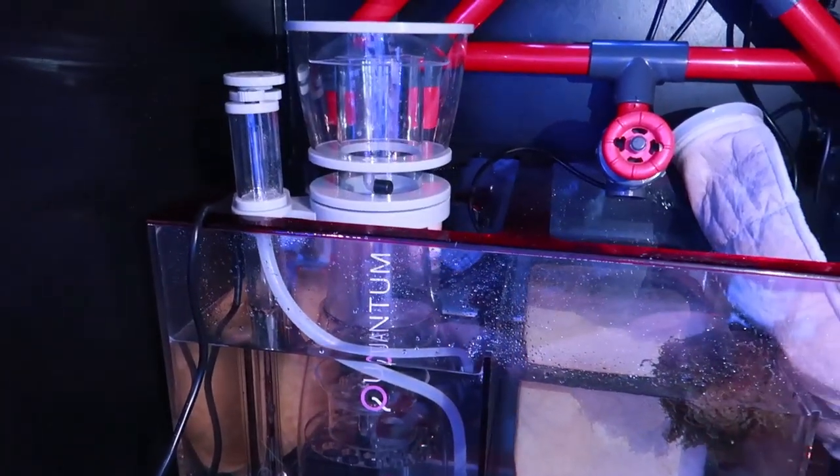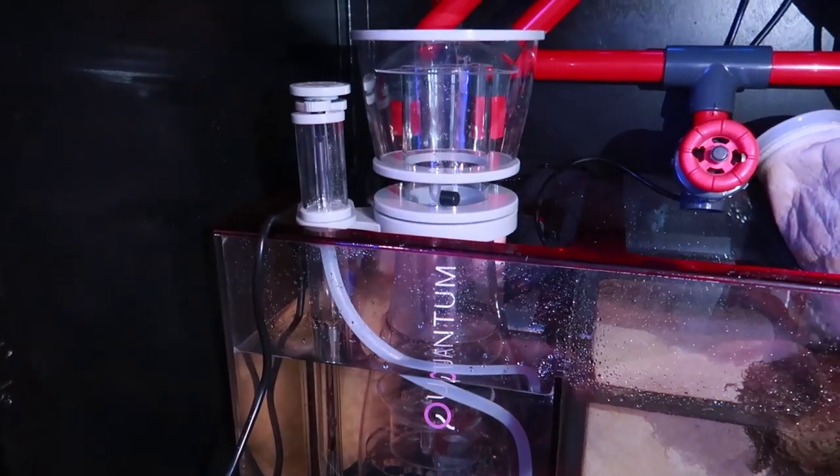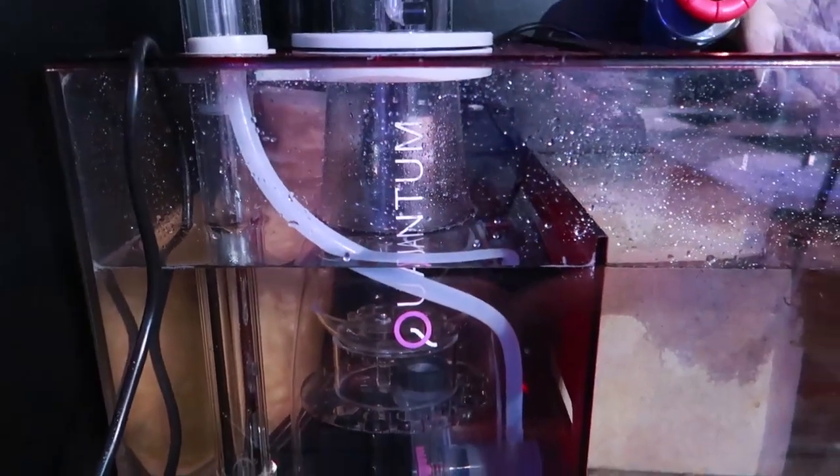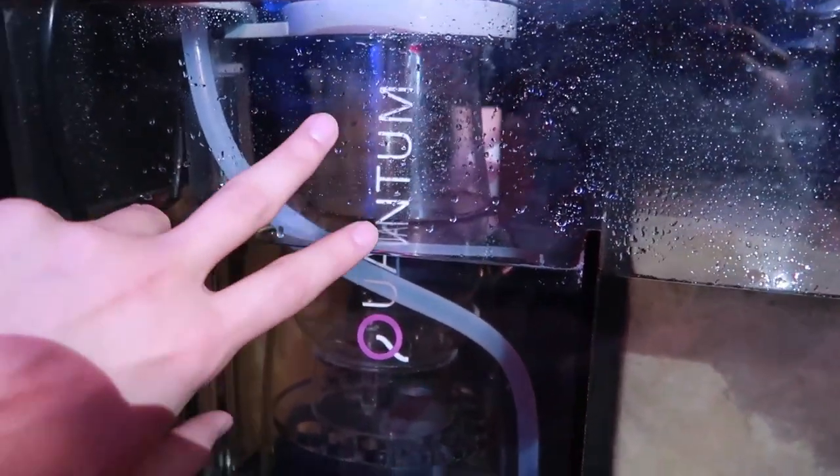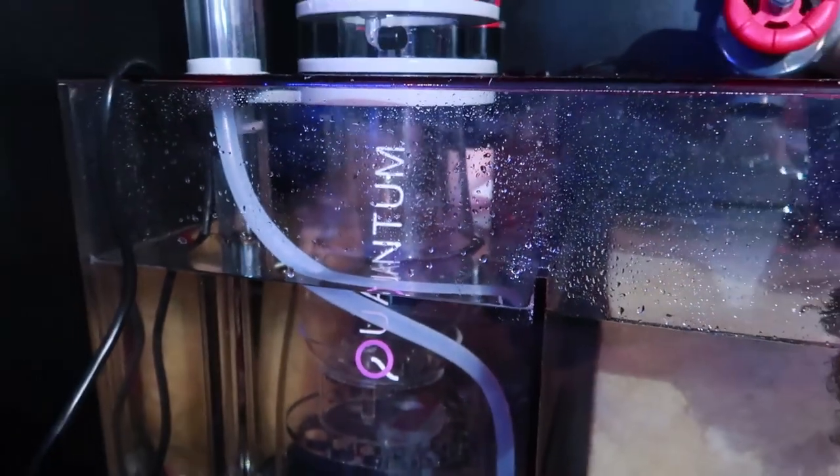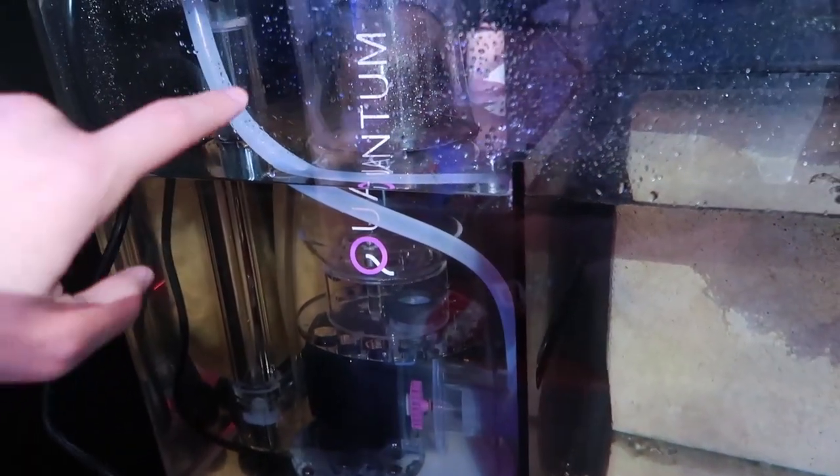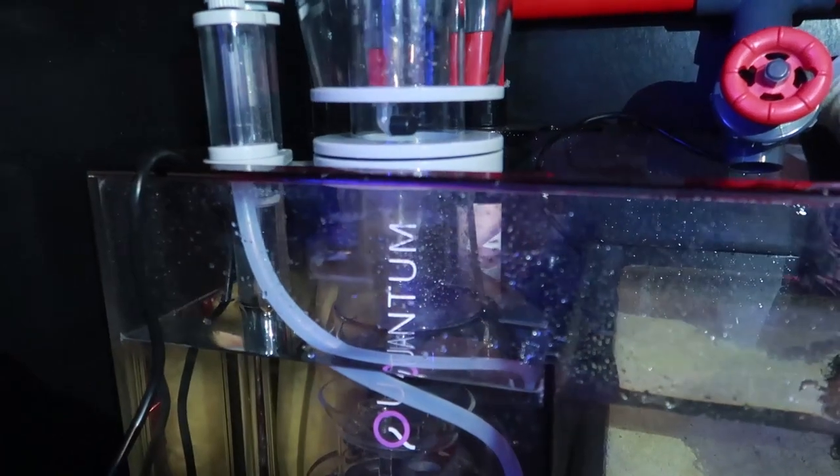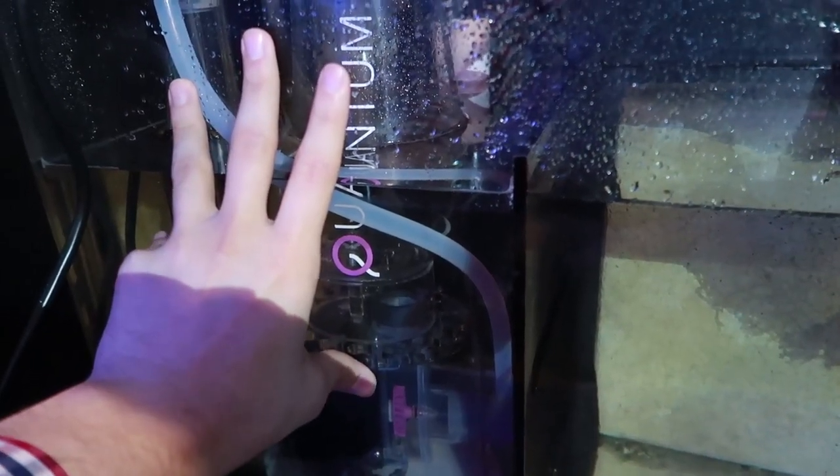For those of you that came here for the Nyos quantum 160, what I'm going to be doing is taking the next day or two to break this unit in according to the manufacturer specs. If you did not read the manual or if you're just unfamiliar with skimmers in general, you need to get the waterline of the skimmer to a very specific point, and that's specific to the skimmer unit itself. In this particular case, the Nyos quantum, they recommend eight inches from the bottom. I'm going to measure this out and set this up real quick and I'll show you guys using it in operation.